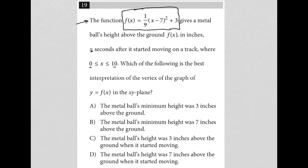First of all, the vertex is provided for us. We have f(x) equals one ninth (x minus seven) squared plus three. We have to realize that this is coming from y equals a(x minus h) squared plus k, where (h, k) is the vertex.